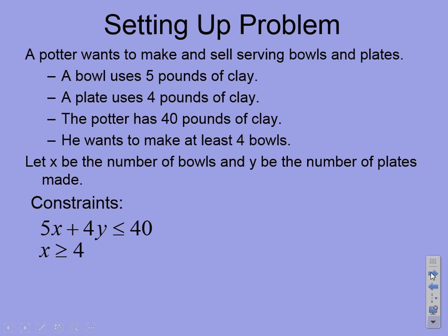He wants to make at least four bowls, so there's another constraint. His X needs to be greater than or equal to four because he wants to make at least four — not anything less. His Y can be anything, but it has to be greater than or equal to zero, because we wouldn't make a negative number of plates. We're talking about the real world, usually working in quadrant one where values are positive.